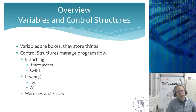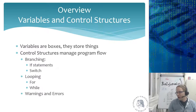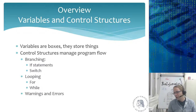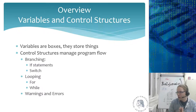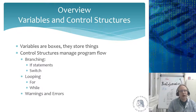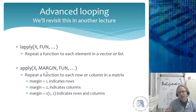Summary: variables are boxes; control structures manage program flow. You have branching (if statements and switches) and loops (for and while), plus warnings and errors. That's essentially everything you need to write a full operating system. All code in R is built from these basic blocks — along with data input/output like read.table() and write.table().